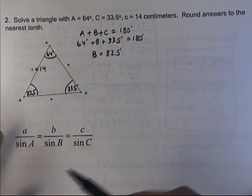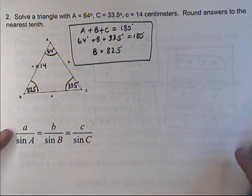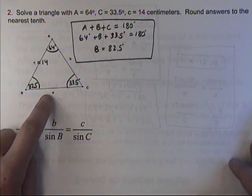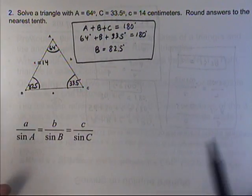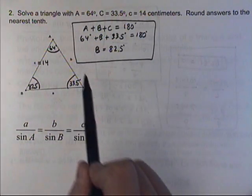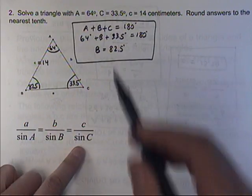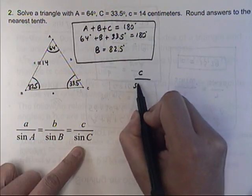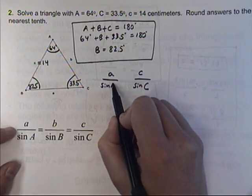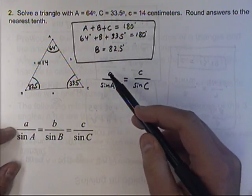Now, finding the other sides — I need to find side A. So if I want to find side A, I have to find at least one of these fractions where I know both numbers. The only one I know both of is side C and angle C, so I'll have to use that one in order to find side A over the sine of angle A.